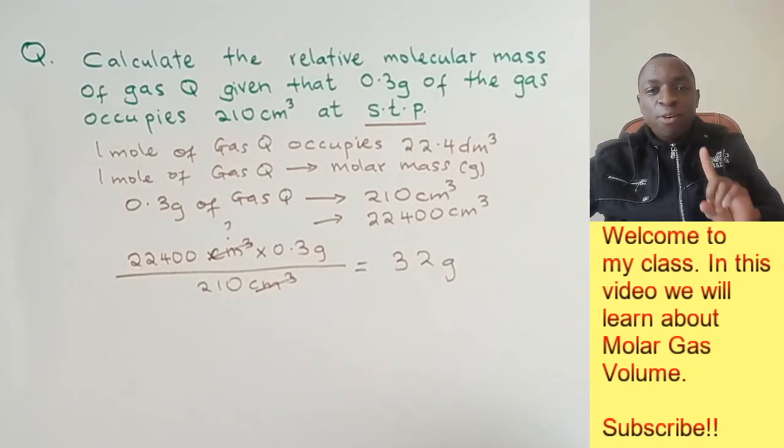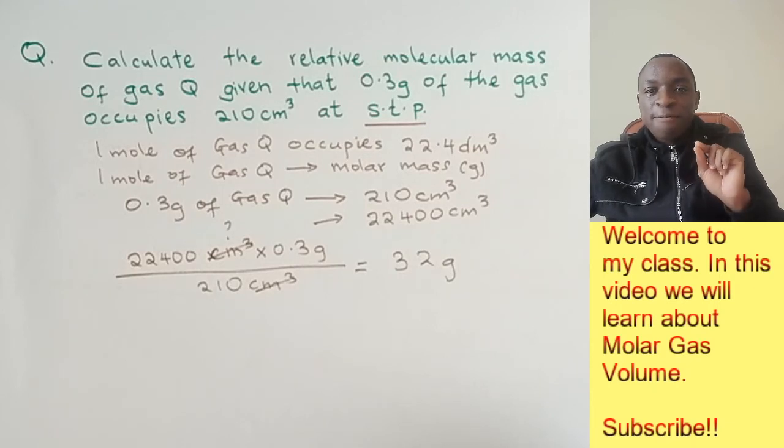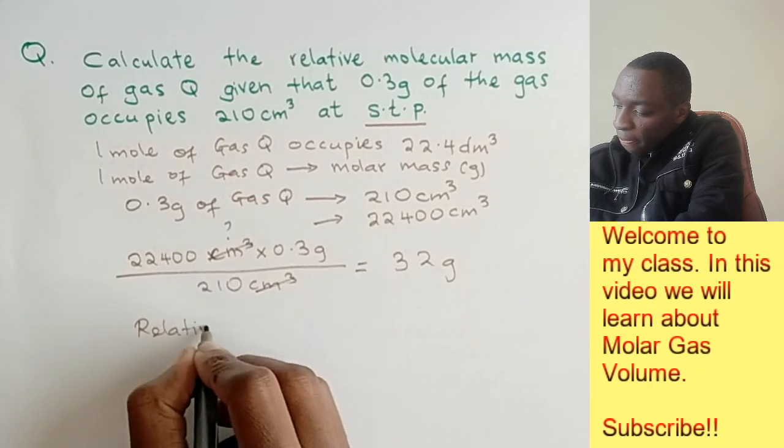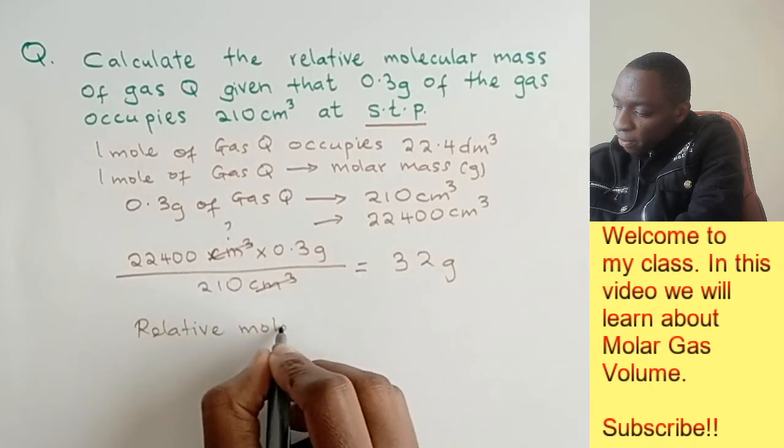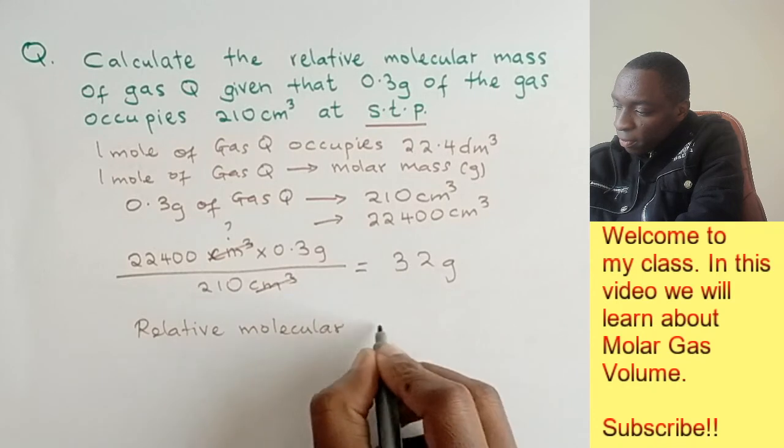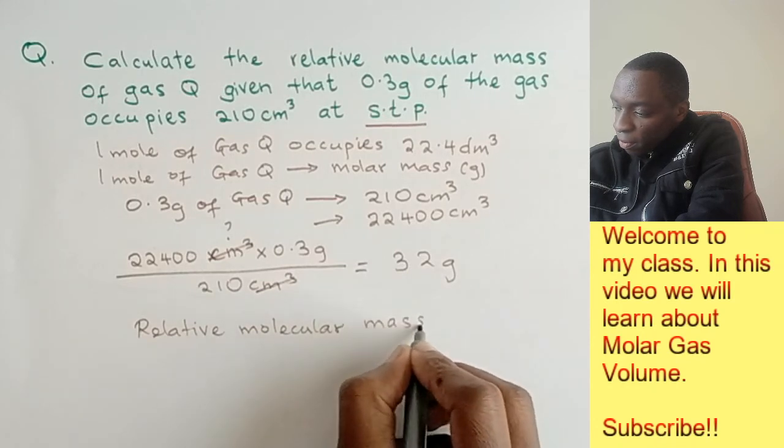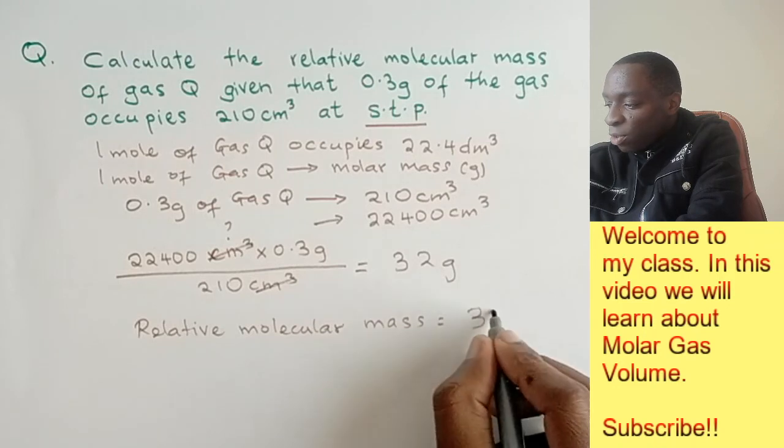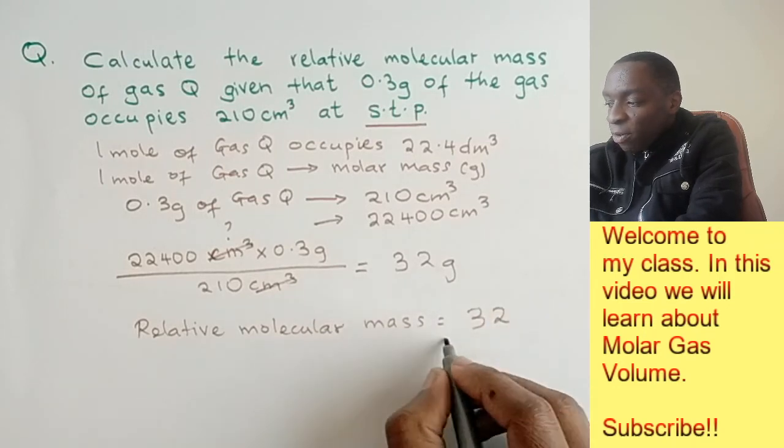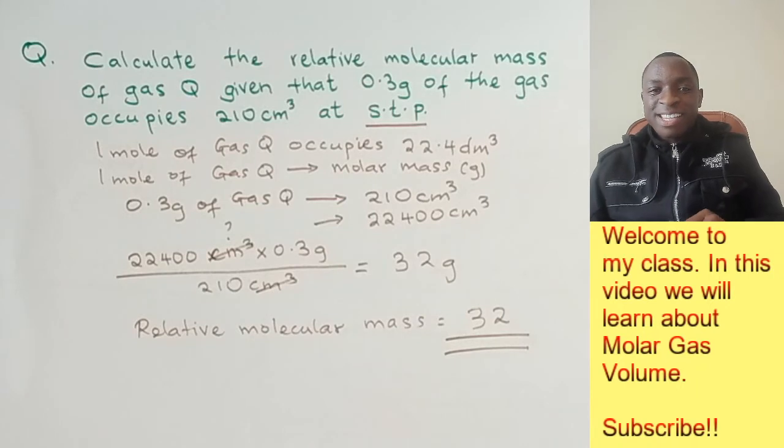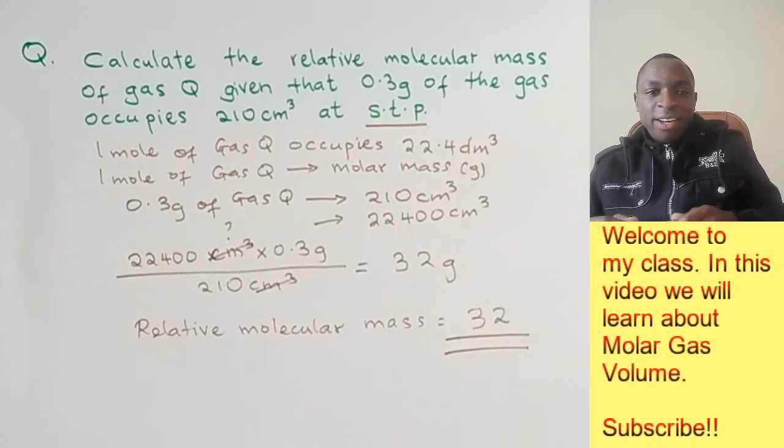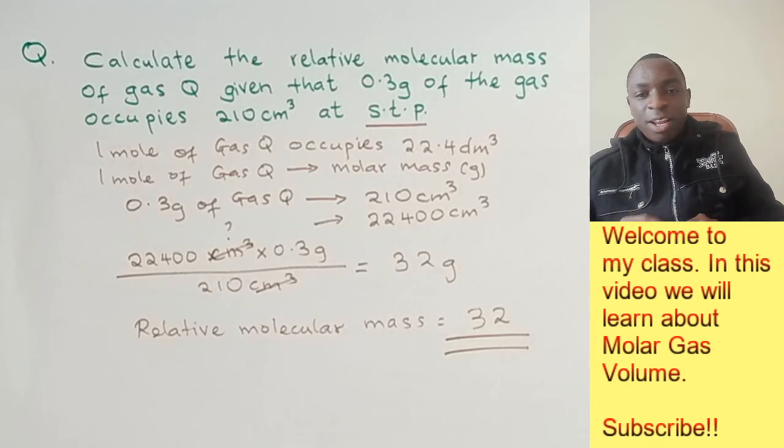Now that you have 32 grams as your molar mass, whenever you're asked for relative molecular mass, remember it does not have any units. Therefore, the answer is 32. That is how we calculate the relative molecular mass using the molar gas volume.